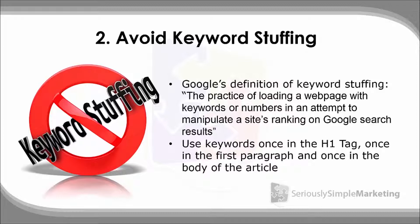If you've heard horror stories about sites dropping off search results or being delisted by Google, it's often because of techniques like keyword stuffing. What you really want to do is write your article or blog post so a normal human can read it and it makes sense to them. You're not writing for the robots, you're writing for humans. You definitely want keywords in there, but don't overdo it — just make it natural.